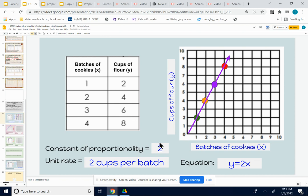Notice that two keeps popping its head in a lot of places. The two is the constant of proportionality. The two is part of the unit rate. The two is the number inside the equation.